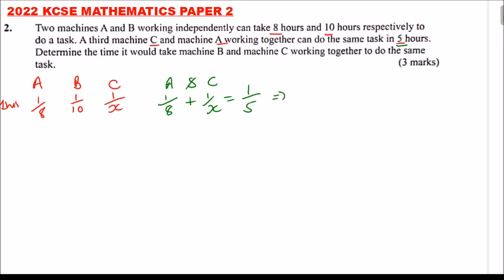So this implies that 1/X equals 1/5 minus 1/8. You can add up using your calculator with a fraction option, but if you're not able to do that, you can use the ordinary method of finding the LCM. The LCM of 8 and 5 is 40. 40 divided by 5 is 8, times 1 is 8. 40 divided by 8 is 5, times 1 is 5. This gives us 1/X equals 3/40. So machine C can do 3/40 of the job in 1 hour.